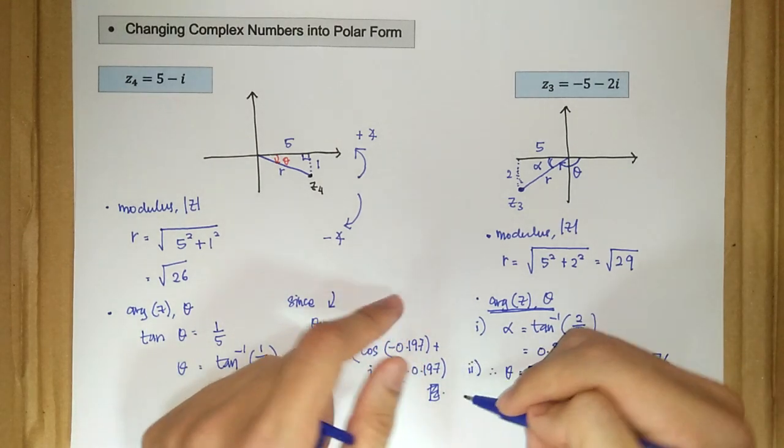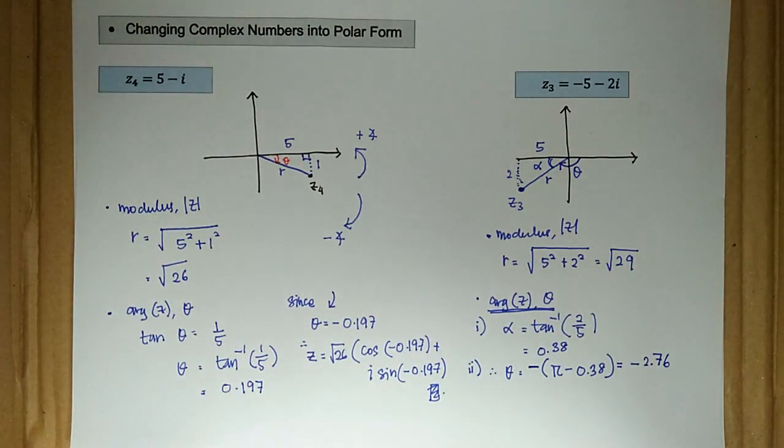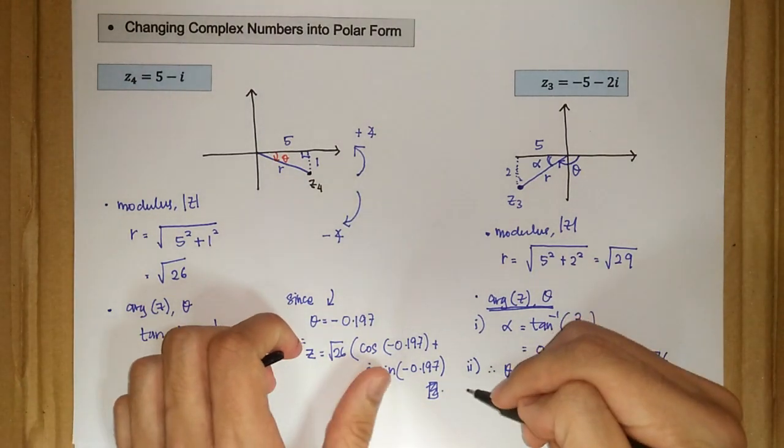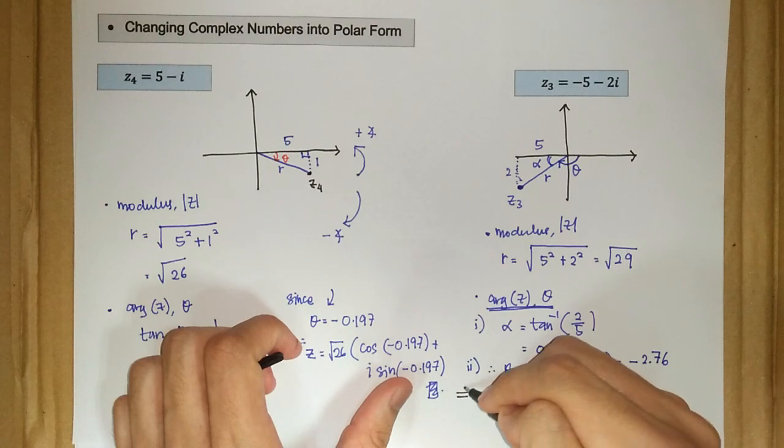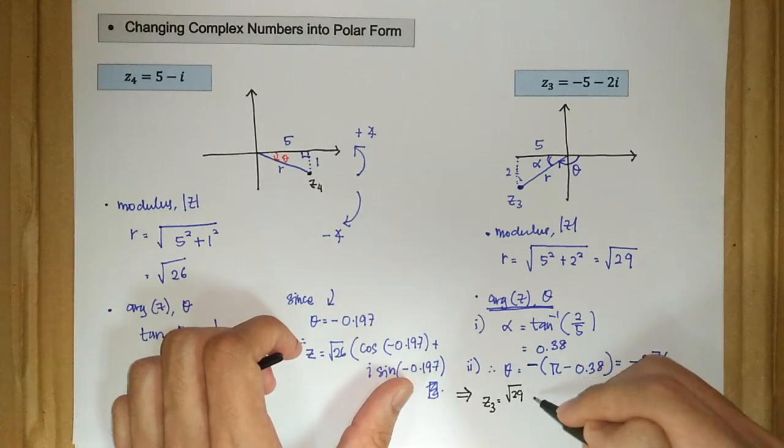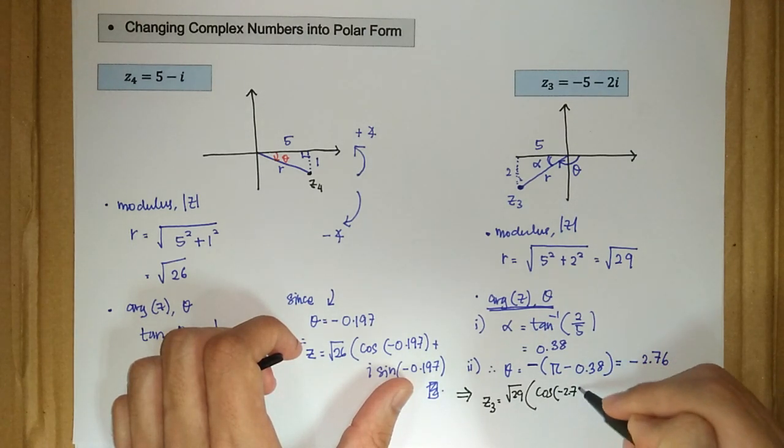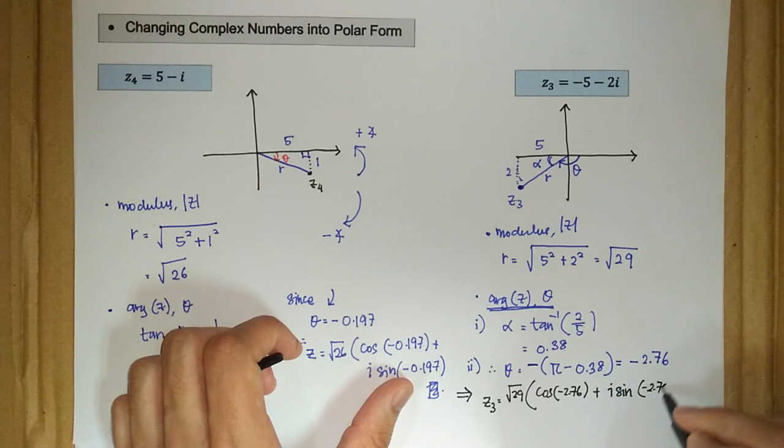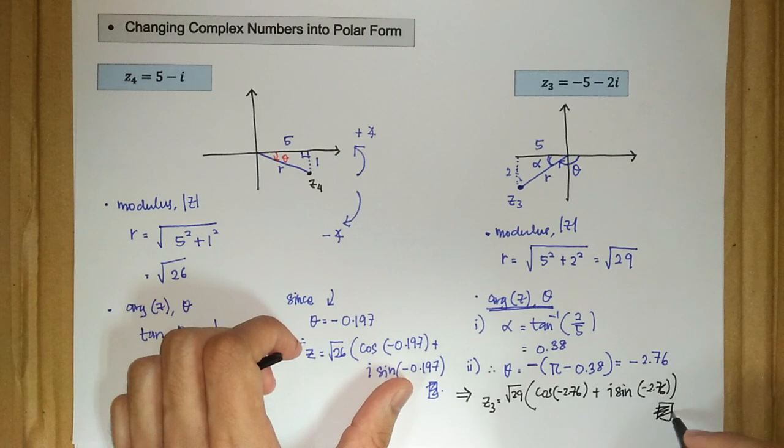Therefore, our z₃ is equal to, in its polar form, let me change my marker here. So our z₃ here is just square root of 29 times cosine of negative 2.76 plus i sine of negative 2.76. This is the final answer.